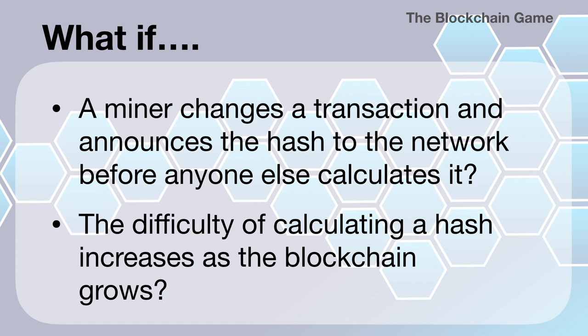The difficulty of calculating a hash increases as the blockchain grows. I originally set this game so that the hash had to be divisible by both 3 and 2, but I found with some audiences that was a bit too much. If you're doing this in an advanced engineering school and want to make it more difficult, you could start by requiring divisibility by 2 for a couple of blocks, then by 2 and 3, then by 2, 3, and 5 — keep increasing the criteria for the hash as the blockchain grows.